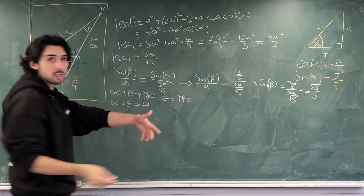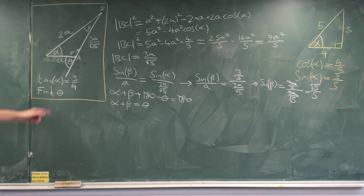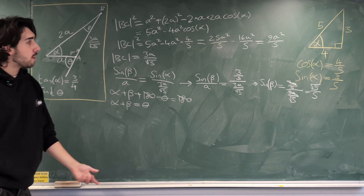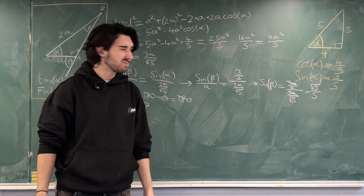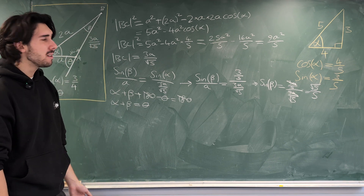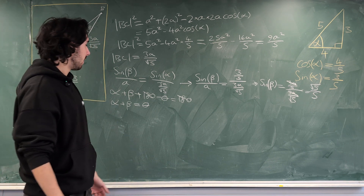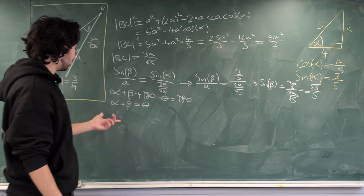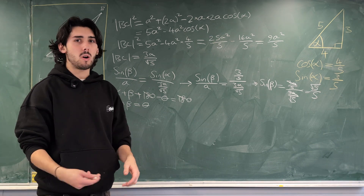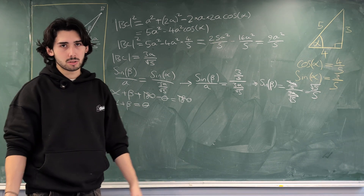Since the angles inside a triangle add up to 180°, we have alpha + beta + (180° − theta) = 180°. Cancelling 180° from both sides gives alpha + beta = theta. So theta = arctan(3/4) + arcsin(√5/5). That's technically correct but a bit ugly — arctan of something plus arcsin of something else is not a clean answer.